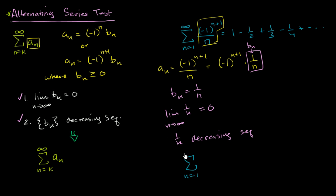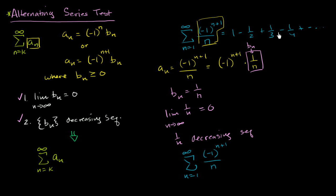So the series from n equals one to infinity of negative one to the n plus one over n converges. That's kind of interesting, because we've already seen that if all of these terms were positive, we'd just have the harmonic series, and that one doesn't converge. But this one does — putting these negatives here does the trick. We can also prove this converges using other techniques, in particular the limit comparison test.